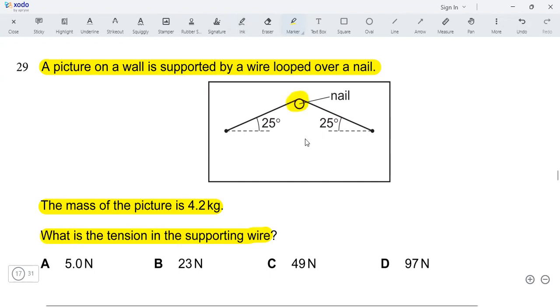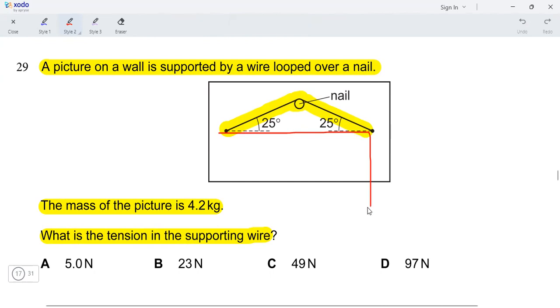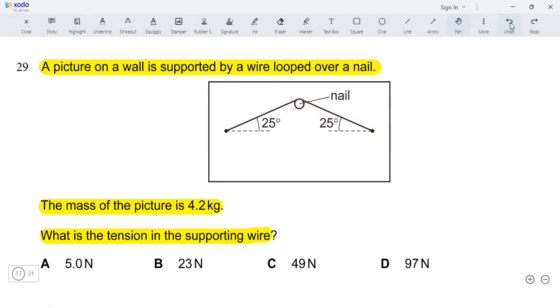All right, so this is a nail and these are two supporting wires and the pitcher must be hanging something like this. All right, and the question gives us the mass of the pitcher. So let's try to draw all the forces on the diagram.